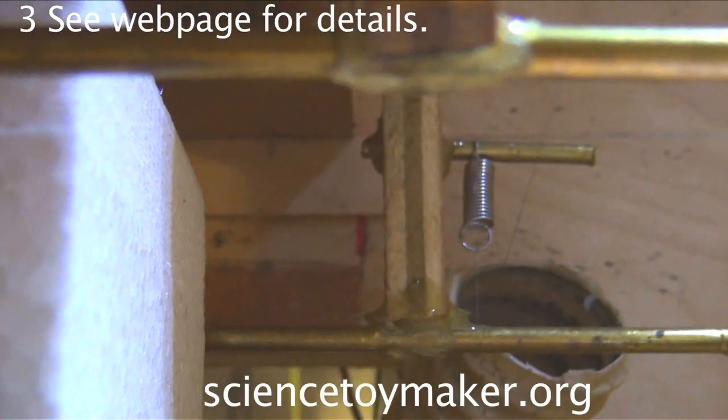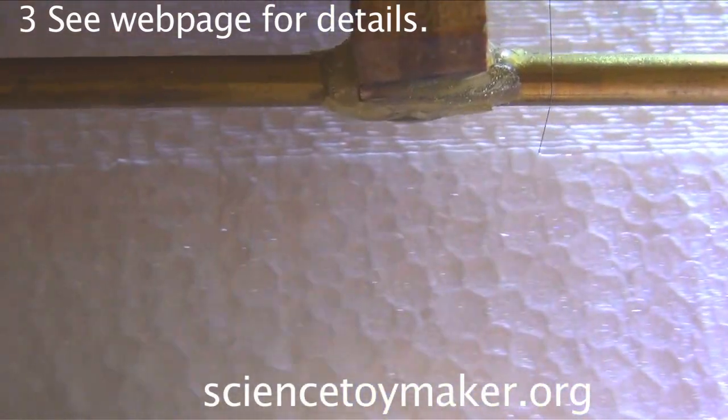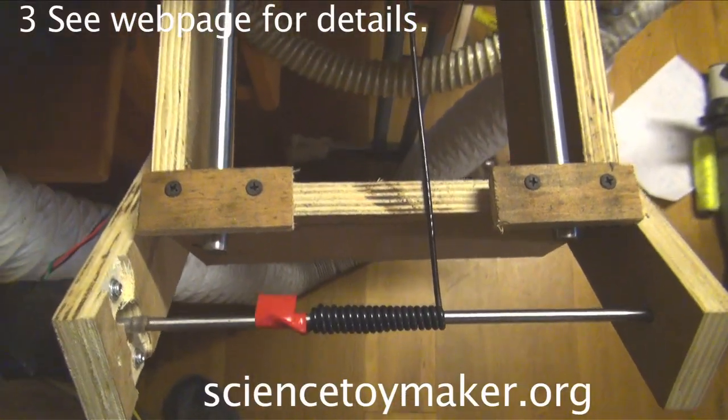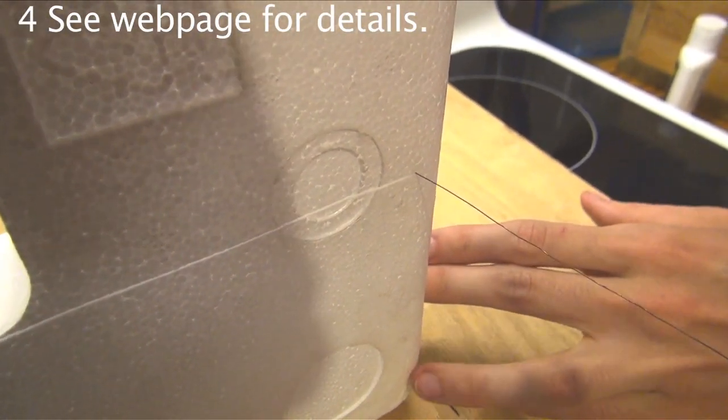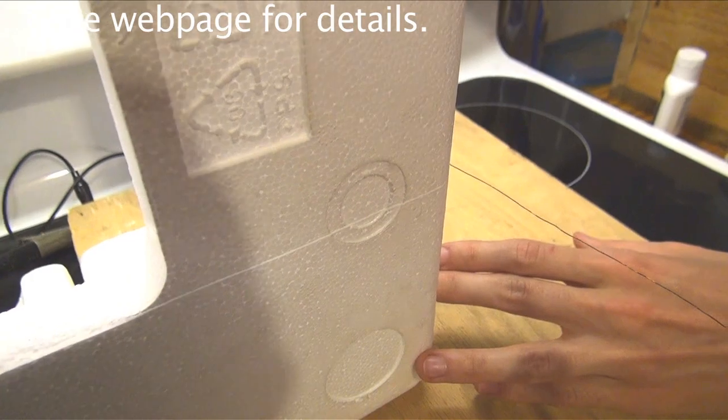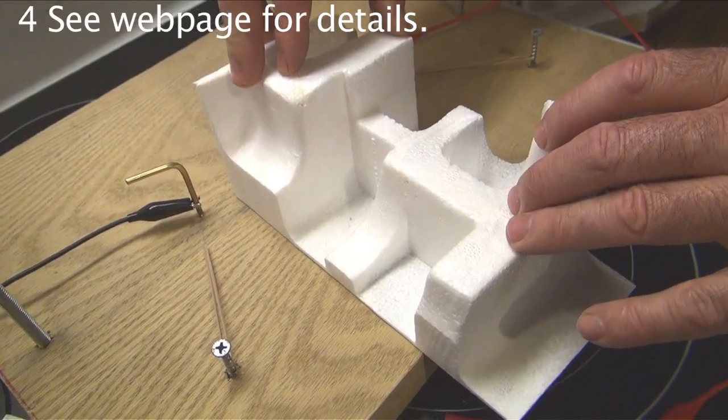You can get thin sheets of foam cut on a robotic CNC hotwire cutter from Sciencetoymaker.org. Or you can hotwire cut your own foam sheets from scratch with an electrically heated nichrome wire using recycled packaging foam and a common car battery charger.